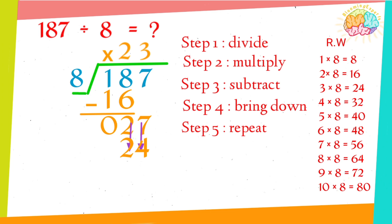Now again, Step 3: Subtract. 27 minus 24. In the ones, 7 minus 4 equals 3. In the tens place, 2 minus 2 equals 0.